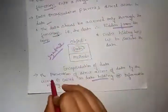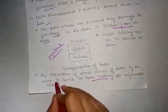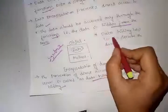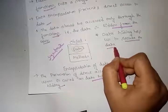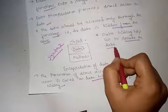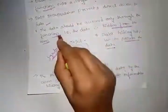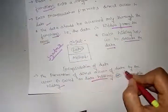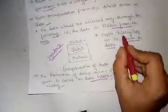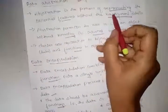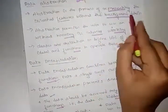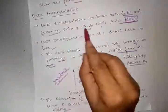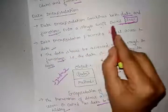Encapsulation prevents direct access to the data. The prevention of direct access of data by users is called data hiding. Data hiding helps to secure the data. Data abstraction is the process of representing essential features without knowing background details, and data encapsulation combines both data and functions into a single unit called a class.